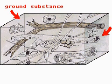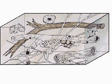Connective tissue is made up of cells and fibers in a jelly-like ground substance. Present throughout the body, connective tissue holds parts together and acts as packing. There are several kinds of connective tissue, which differ in the amount and type of cells and fibers in their makeup.